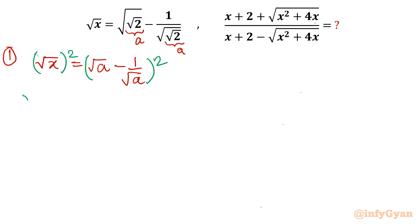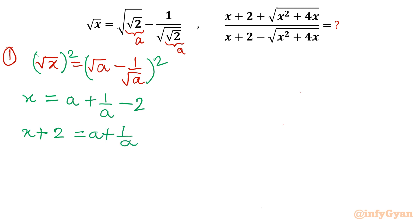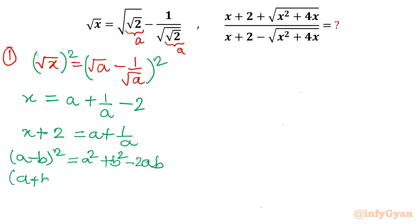After squaring both sides, the left side gives x, free of the square root. The right-hand side gives a² + 1/a² − 2, using the identity (a − b)² = a² + b² − 2ab, so that gives a + 1/a − 2. If I add 2 to both sides, I get x + 2 = a + 1/a. I also note the identity (a + b)² = a² + b² + 2ab for later use.